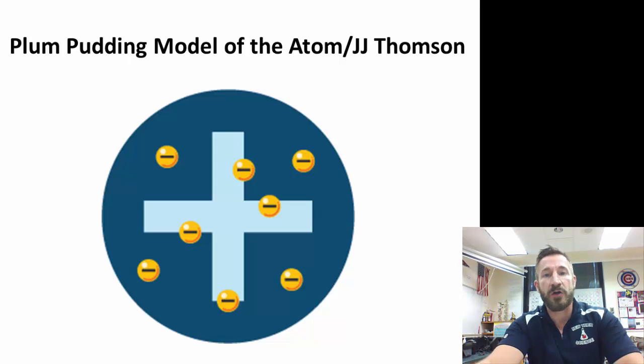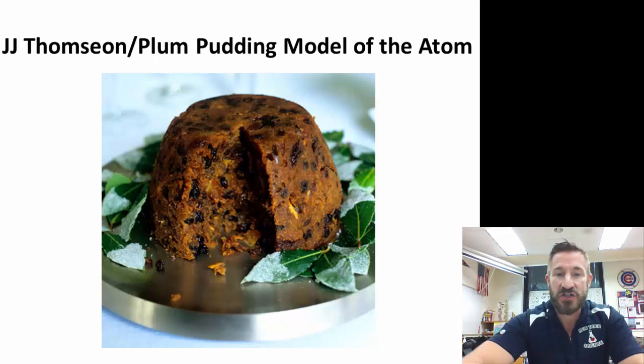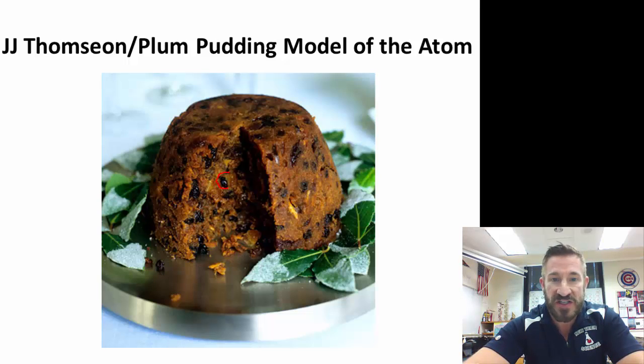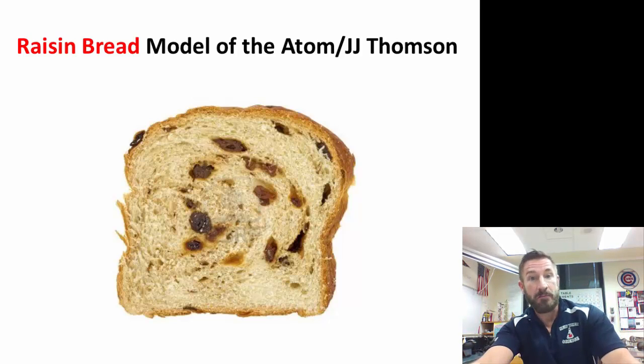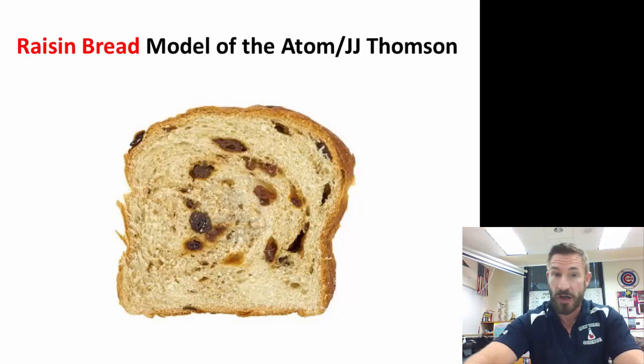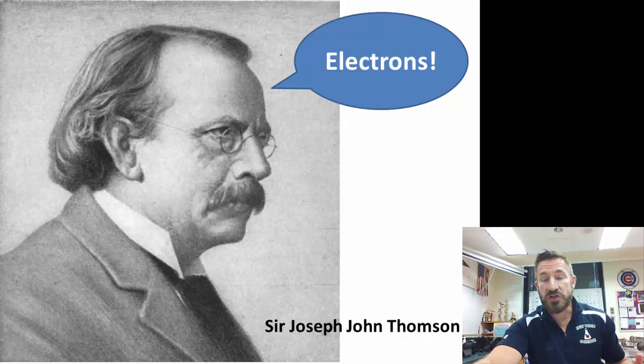We call this theory the plum pudding model of J.J. Thompson. Where does he come up with that idea? Well, at the time, plum pudding was actually a very popular dish. The different things in the plum pudding would represent negative electrons, and the dough around it would be positive. You also could think of it as a raisin bread model of the atom. Some people call it the chocolate chip cookie model. The chocolate chips are the negative part of the atom, and the dough is the positive part. J.J. Thompson is attributed with discovering the subatomic particle, the electron, which is negatively charged.